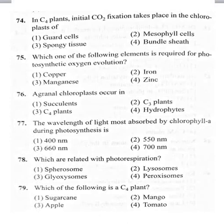76th bit: agranal chloroplasts occur in — option 1 succulents, option 2 C3 plants, option 3 C4 plants, option 4 hydrophytes. This is a repeated bit. Agranal chloroplasts usually occur in C4 plants; they are a characteristic feature of C4 plants and are located in bundle sheath cells.